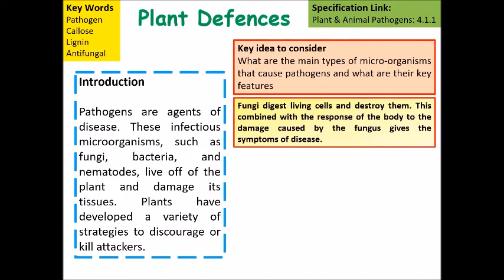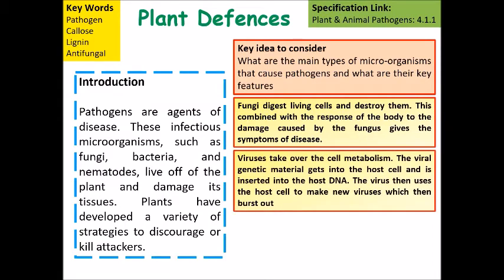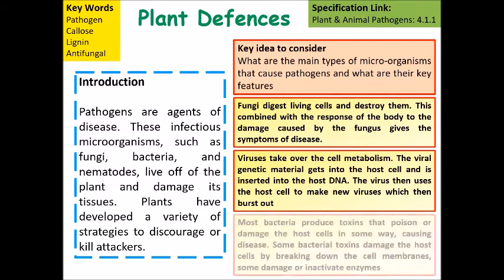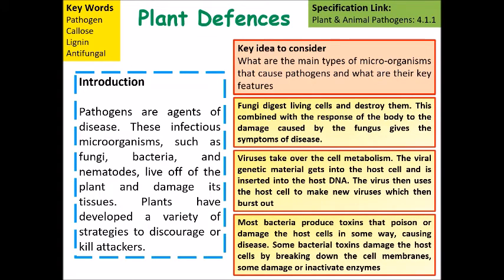You can also have viruses, which take over the metabolism of a cell. The viral genetic material gets into the host cell, inserts itself, and causes the virus to be replicated within that cell. Finally, bacteria will infect plants and produce toxins which damage plant cells, particularly affecting the cell membranes, cell walls, and inactivating enzymes within the cells.